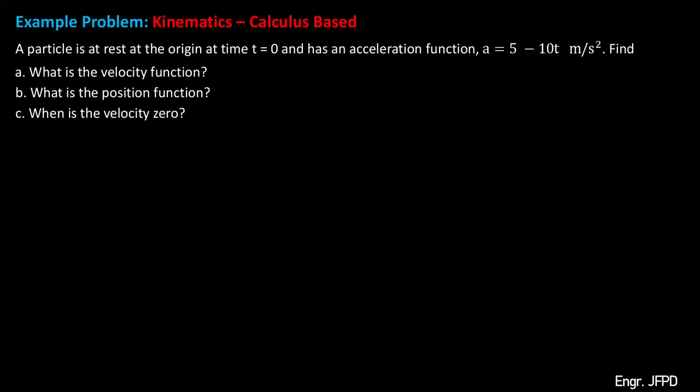In this lesson, we will solve kinematics problems using calculus. For our first problem, a particle is at rest at the origin at time t equals 0, and has an acceleration function of a equals 5 minus 10t meters per second squared.